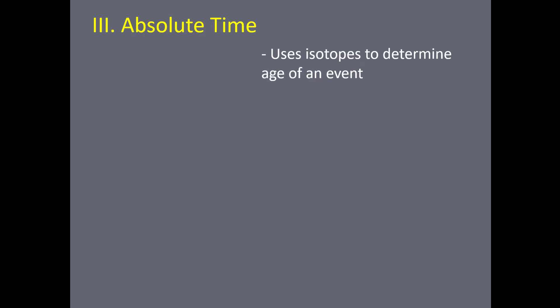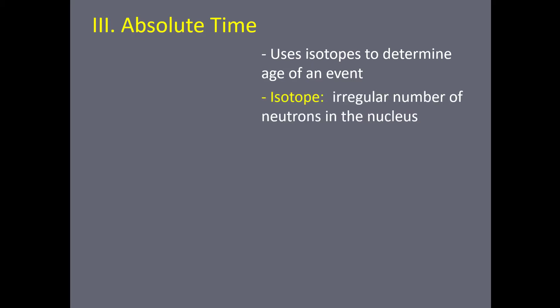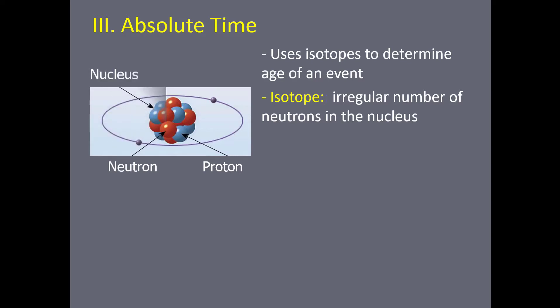You may remember from chapter 3 when we talked about chemistry briefly — an isotope is an atom that has an irregular number of neutrons in the nucleus. Just to remind you and reconnect some of those synapses, this is a model of an atom where the nucleus is composed of protons and neutrons, and then there are electrons that zoom around outside of the nucleus.